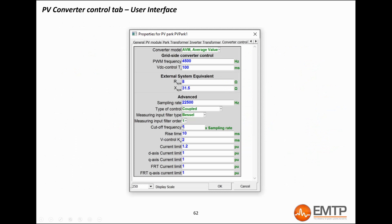All the FRT thresholds can be found in the converter control data tab, as well as the parameters required by the inner and outer control loops. The PWM and sampling rate inputs are important only if the converter is modeled in detail with IGBTs. They are not in the case of AVM.